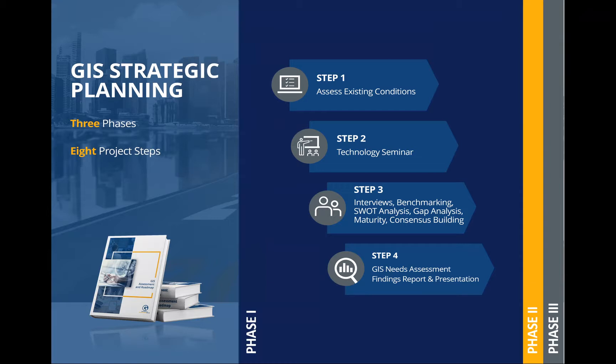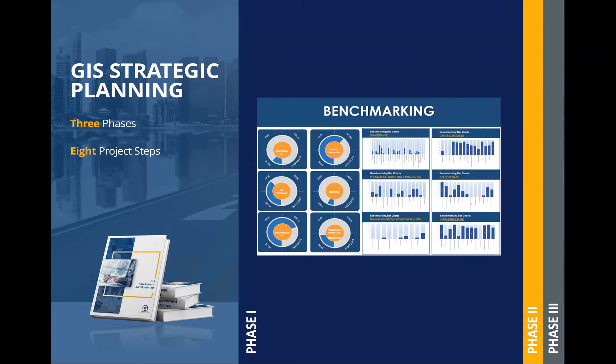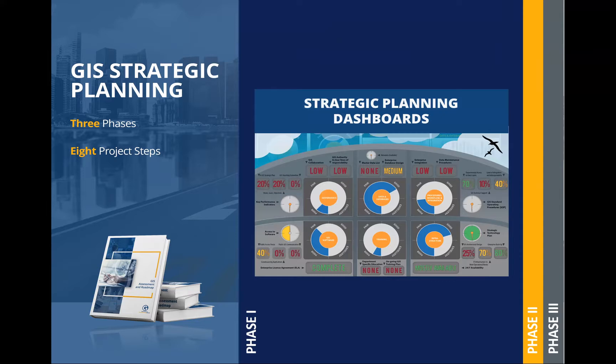Phase one really is documenting the needs of the organisation, and that's extensive. I've just spent 30 seconds discussing something that usually takes a couple of months. But you end up with tools that benchmark where the organisation is. In this example, you should be able to identify where you are with governance, digital data, procedures, software, training, and infrastructure. You can really create a dashboard of that, and that's the type of thing you would want to do for your organisation.